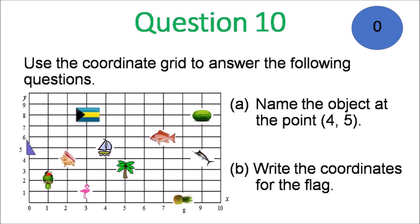Question 10. Use the coordinate grid to answer the following questions. A. Name the object at the point 4,5 and B. Write the coordinates for the flag.